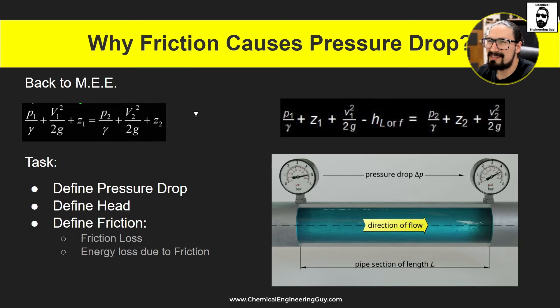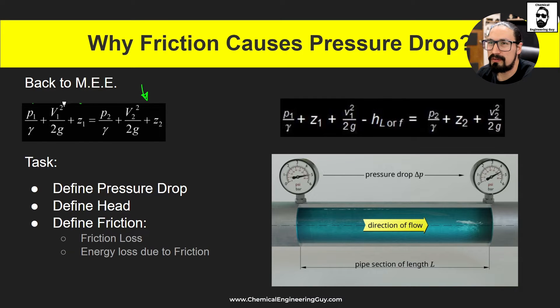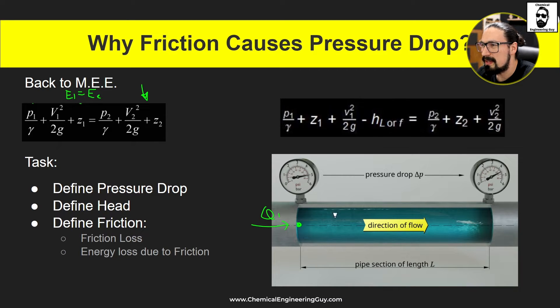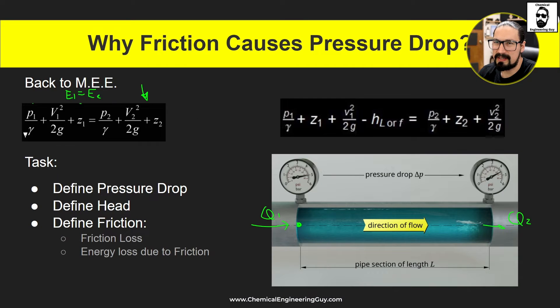One of the main problems I see is that a lot of people stick to Bernoulli's equation without friction loss. In order to have a proper system, energy going in at point one must equal energy going out at point two. Since this is a continuous process, Q1 equals Q2 — the volumetric flow rate overall — so the left-hand side must equal the right-hand side.